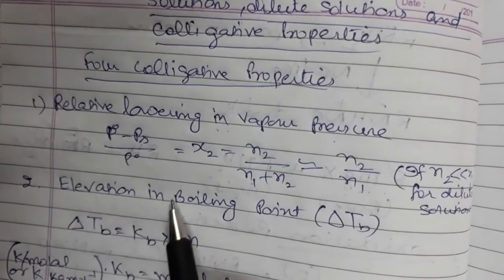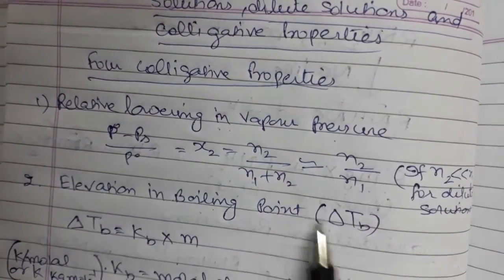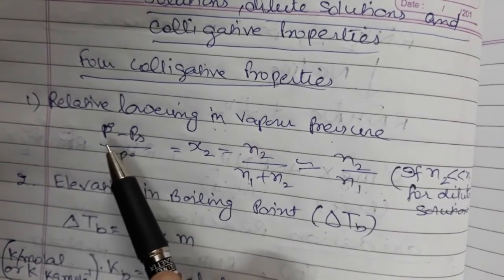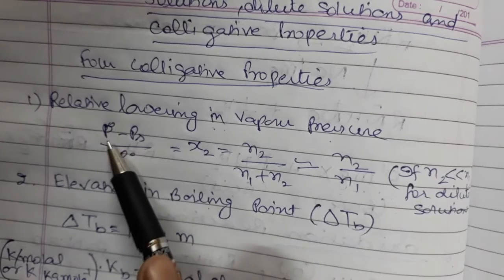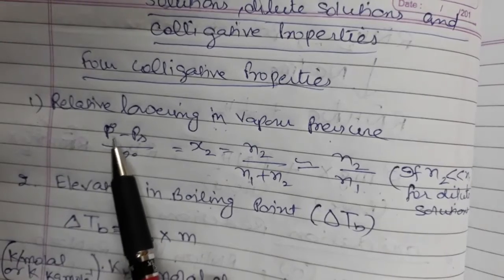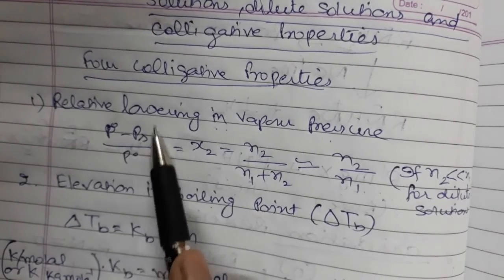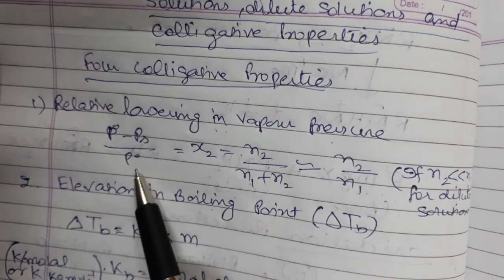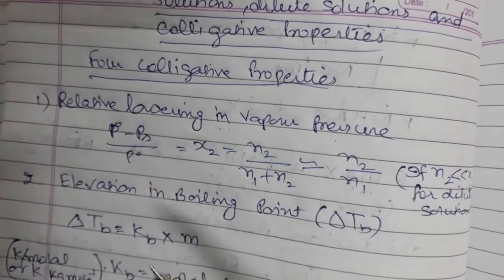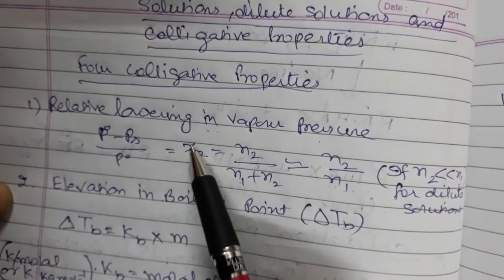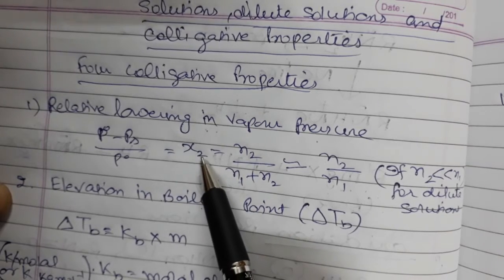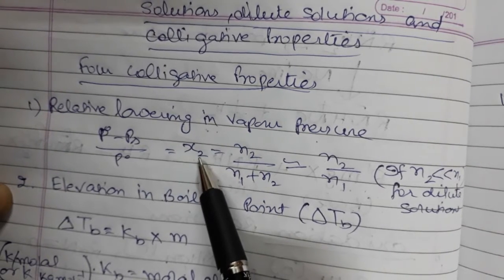The second property is elevation in boiling point. Reviewing the first property: relative lowering in vapor pressure — p-naught is the vapor pressure of the pure solvent, whereas ps is the vapor pressure of the solution, which is lesser than that of the pure solvent. This difference is the lowering in vapor pressure, and dividing it by the vapor pressure of the pure solvent gives relative lowering in vapor pressure, which is equal to x2, the mole fraction of the solute. Here, 2 is used for solute and 1 for the solvent.